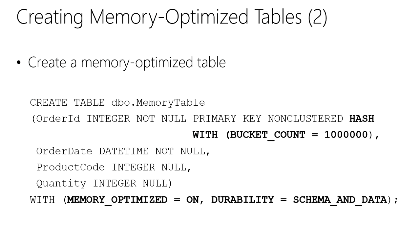If two values hash to the same location, the result is a linked list: the first value stored there has a pointer to the second and third. A hash index is very efficient for equality predicates — for example, finding all sales where customer name equals 'Malcolm'. The alternative is a range index, conceptually similar to traditional binary-tree SQL Server indexes but in-memory, more effective for range queries such as finding all transactions between November and January. Both types are available; hash is highlighted here because it's new and commonly discussed.